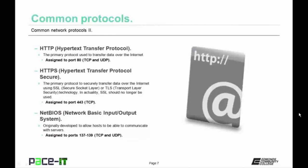Let's start with HTTP — Hypertext Transfer Protocol. It's the primary protocol used to transfer data over the internet, assigned to port 80, and it can use either TCP or UDP as its transport protocol. Then there's HTTPS — Hypertext Transfer Protocol Secure — the primary protocol to securely transfer data over the internet using either SSL or TLS technology. HTTPS is assigned to port 443 and uses TCP as its transport protocol. Then there's NetBIOS — Network Basic Input Output System — originally developed to allow hosts to communicate with servers, assigned to ports 137 through 139, using TCP or UDP.